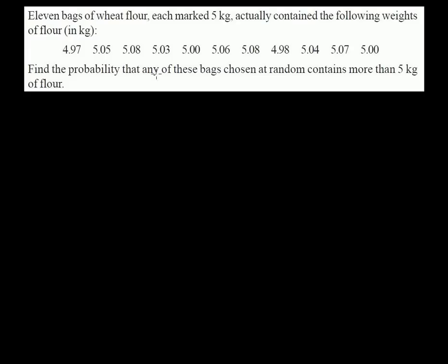Welcome to another problem of probability. The question says: 11 bags of wheat flour, each marked 5 kg, actually contain the following weights of flour: 4.97, 5.05, 5.08, 5.03, 5.06, 5.08, 4.98, 5.04, 5.07, and 5 kg. Find the probability that any of these bags chosen at random contains more than 5 kg.